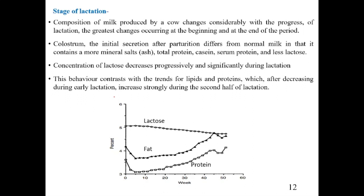Stage of lactation is an important factor. The composition of milk changes considerably with progress of lactation, with the greatest changes occurring at the beginning and end. Colostrum, the initial secretion after parturition, differs from normal milk in that it contains more mineral salts, total protein, casein, serum protein. The concentration of lactose decreases progressively and significantly during lactation. Fat and protein first decrease during early lactation, then increase strongly during the second half.